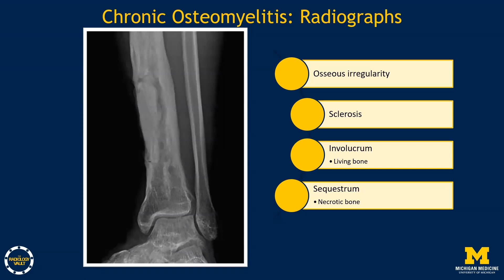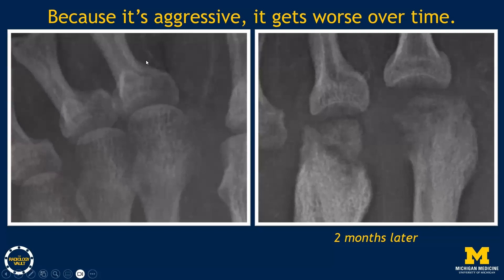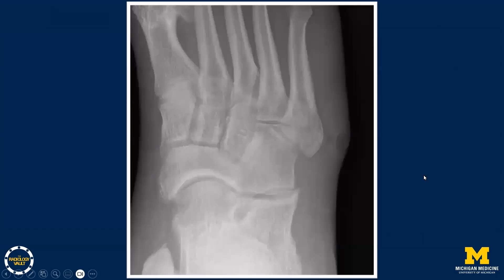With chronic osteomyelitis, there's osseous remodeling and irregularity as the bone tries to heal. On radiographs, it's possible to see the interface between the necrotic sequestrum centrally and the living bone or involucrum that forms around it. For example, radiographs showing normal second and third metatarsal heads at initial presentation can show lucency, erosion, fracture, subluxation at MTP joints, and sclerotic changes two months later. Similarly, a diabetic patient with an ulcer over the fifth metatarsal base may show soft tissue gas with cortical thinning and lucency in the metatarsal base, suggesting osteomyelitis.